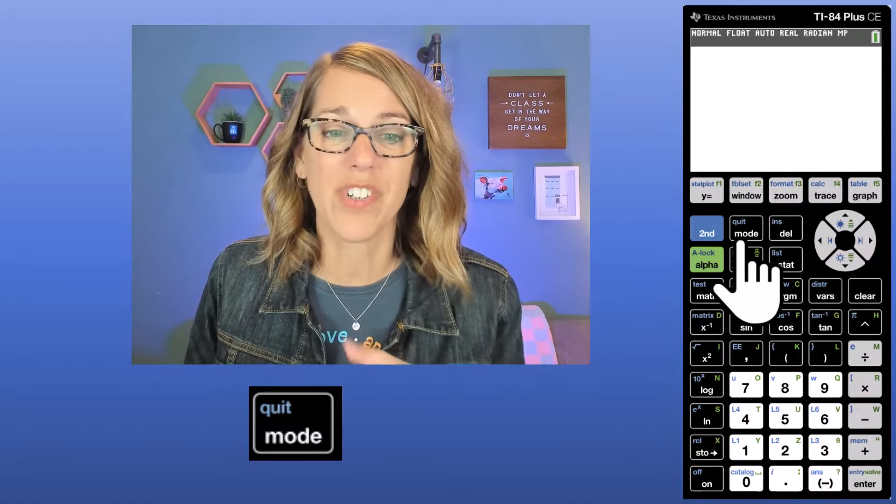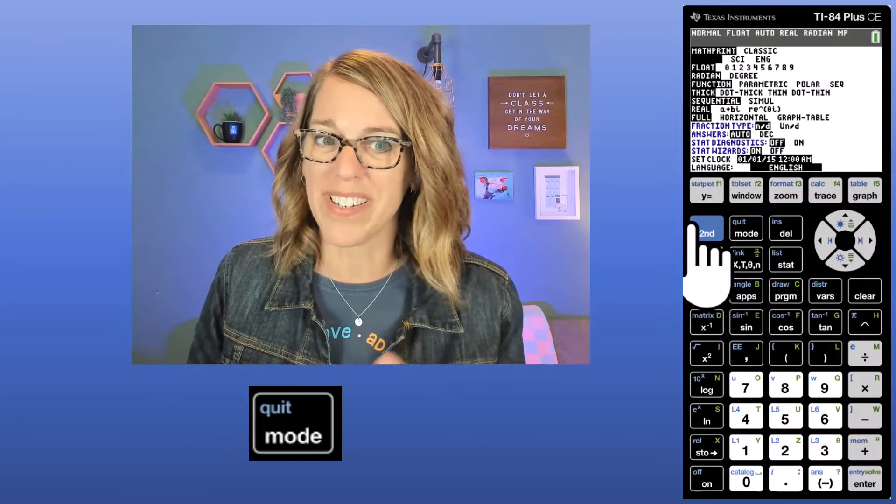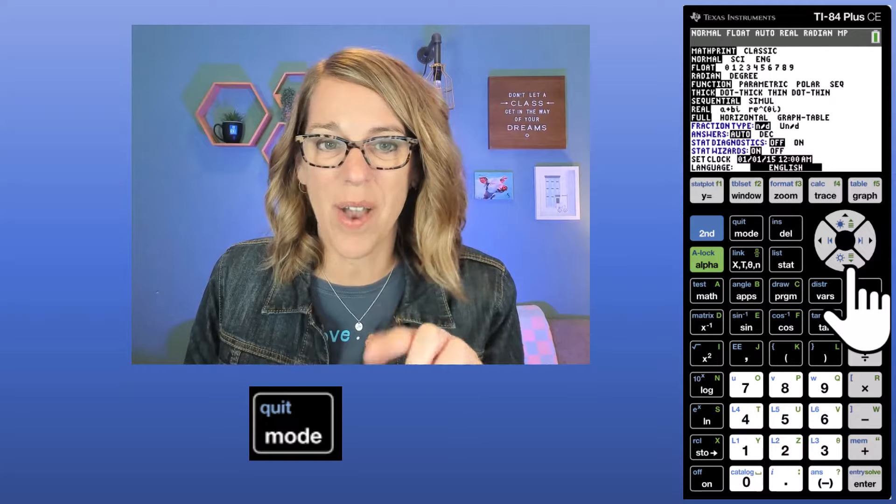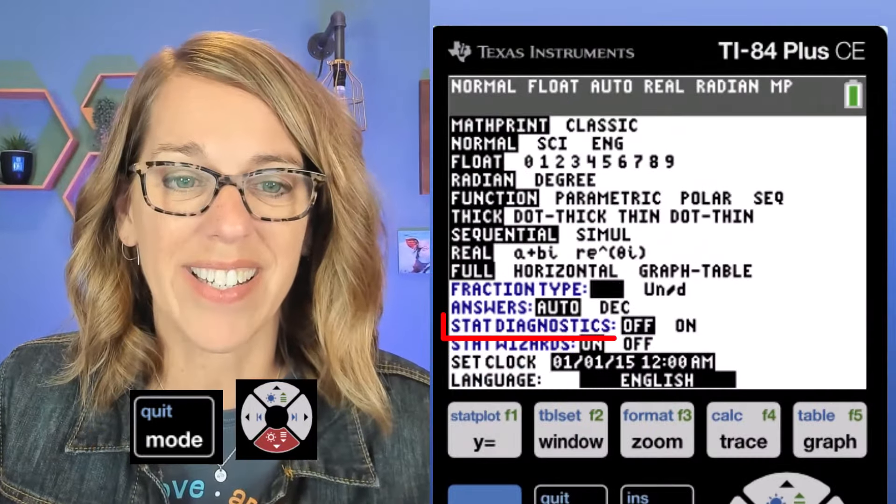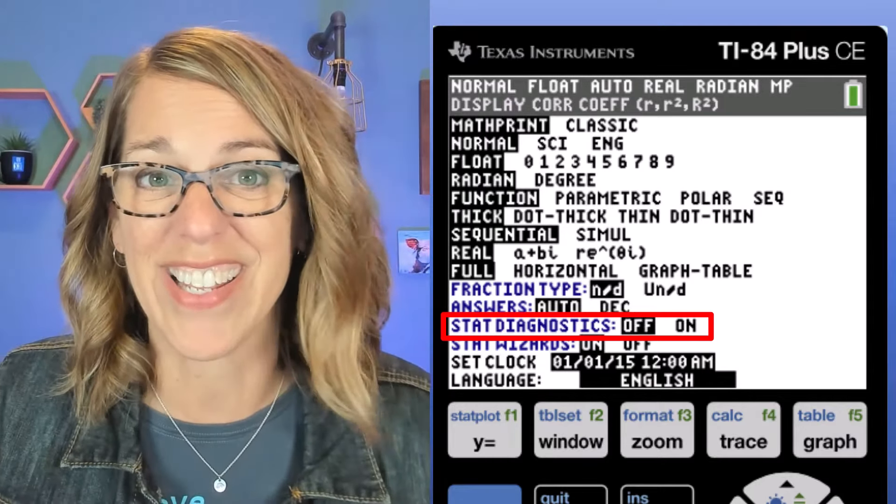Let's go ahead and start with mode. I'm going to click on the mode button, which is near the top row of keys. As I click on that mode button, it brings up all of these different options. Yours may have the option, as I scroll down, of stat diagnostics. If yours doesn't, no big deal, I'm going to show you how to get there in the catalog.